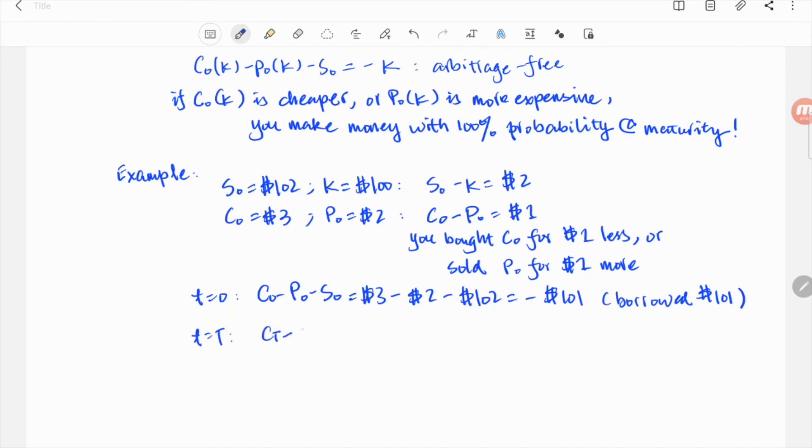At time maturity, the portfolio has a fixed value regardless of what the underlying price is, which is minus K, or equivalently, you only need to return $100 to your broker. You made $1, even if the world has gone crazy before your options expired.